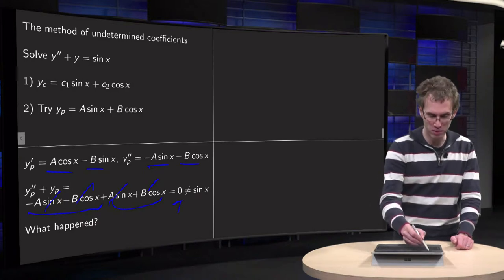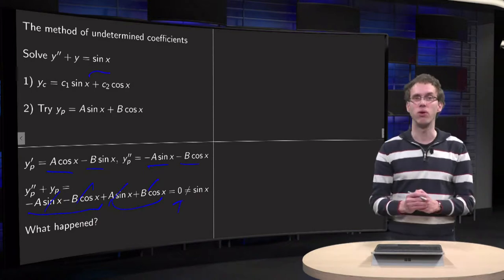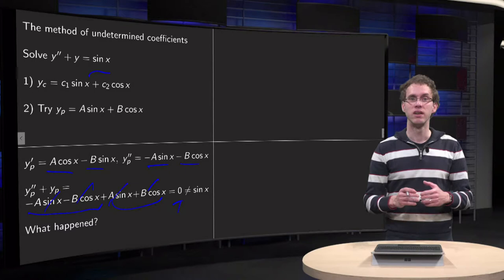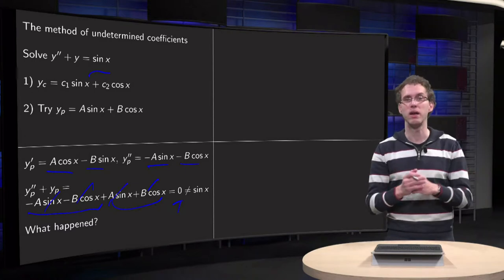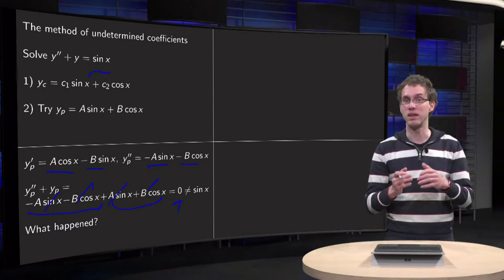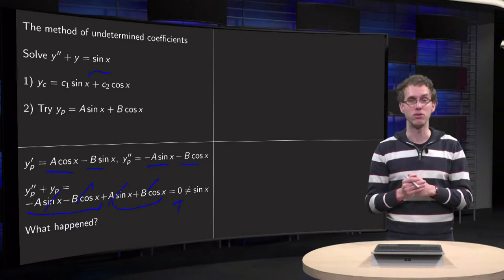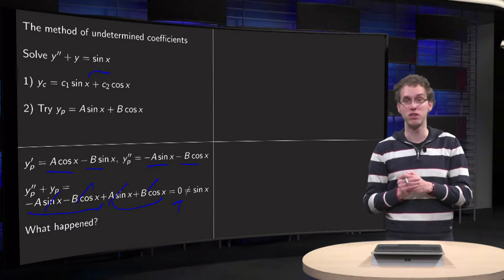But it should be equal to sin(x) for all x. Whatever values of A and B you pick, you can never get it equal to sin(x), because it's equal to zero.